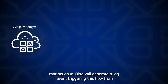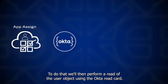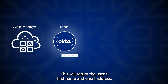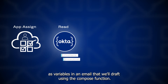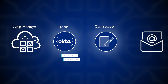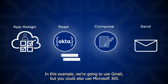That action in Okta will generate a log event triggering this flow. From that event, we'll need to determine which user was added to the application. To do that, we'll perform a read of the user object using the Okta read card. This will return the user's first name and email address. We'll use these attributes as variables in an email drafted using the compose function. Once we have the email drafted, all we need to do is send it using our mail provider — in this example, Gmail, but you could also use Microsoft 365.